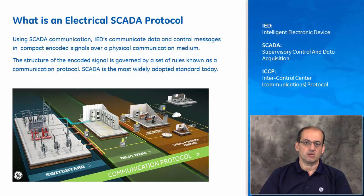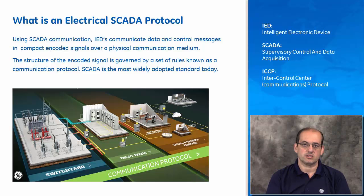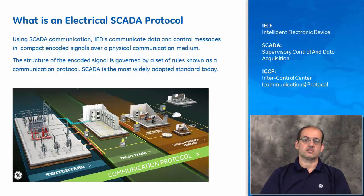The communication could be local to the substation — one device to another device — for example, a data concentrator like the D20 collecting data from a controller. This bay controller could be controlling all the applications in a bay, or it could be over a wide geographic area where you've got a concentrator communicating to a control center.